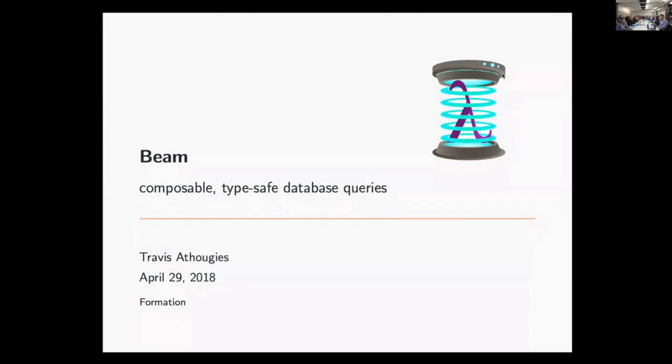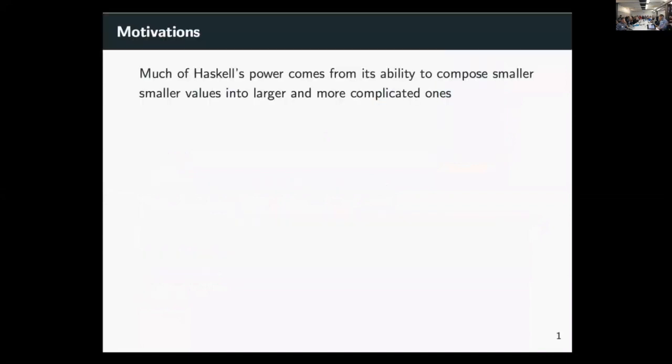One of the things I think is really great about Haskell is that we can do this thing called composing values together. We take small values which are easy to reason about, we take a function or an operator, and we use that on two values, and we get a bigger value. Because we know the properties of the smaller one and the operator, we can understand the larger value.